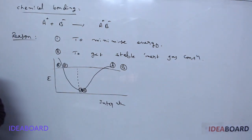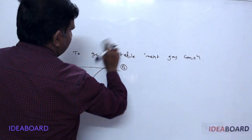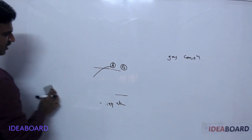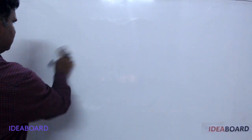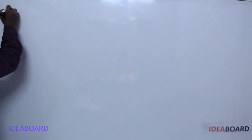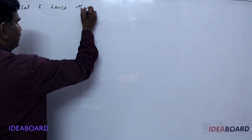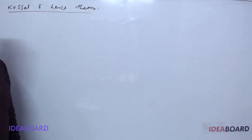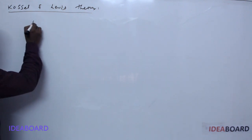To get a stable inert gas configuration — as we studied, in the entire periodic table there is only one group which has a completely filled configuration. Those elements will not participate in any chemical reaction, and they are called inert gases. Based on this, Kossel and Lewis proposed a theory. According to this theory, every atom present in the periodic table will always try to participate in chemical reactions to get the octet configuration.